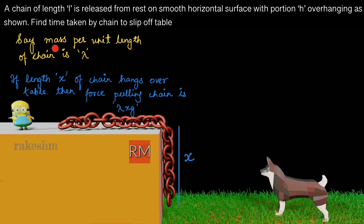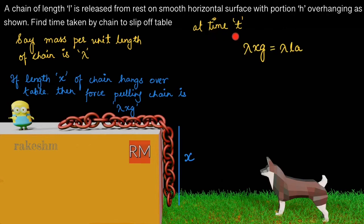Let us assume that the mass per unit length of the chain is lambda, which means total mass divided by total length equals lambda. It is a constant because the chain is uniform. Now at some time t, the chain has fallen a little and length x is hanging over the table. The mass of this part will be lambda times x, and the gravitational force acting on it will be lambda·x·g. So if length x hangs over the table, the force pulling the chain is lambda·x·g. At time t, the total force acting on the chain is lambda·x·g equals total mass times acceleration.